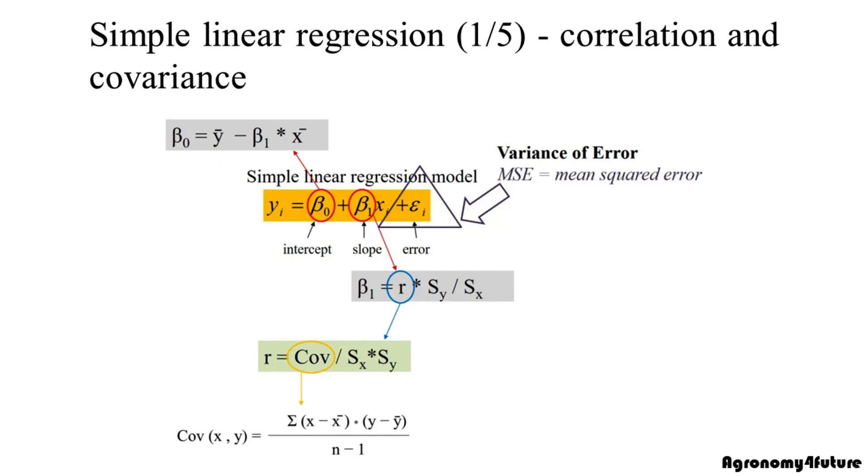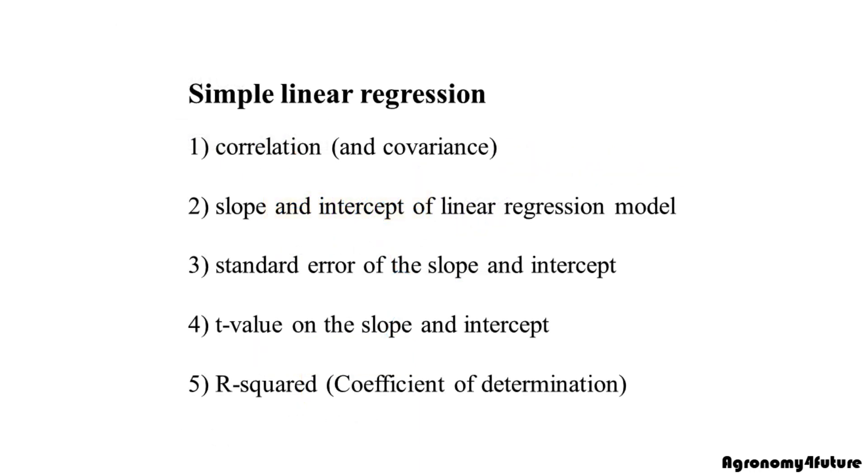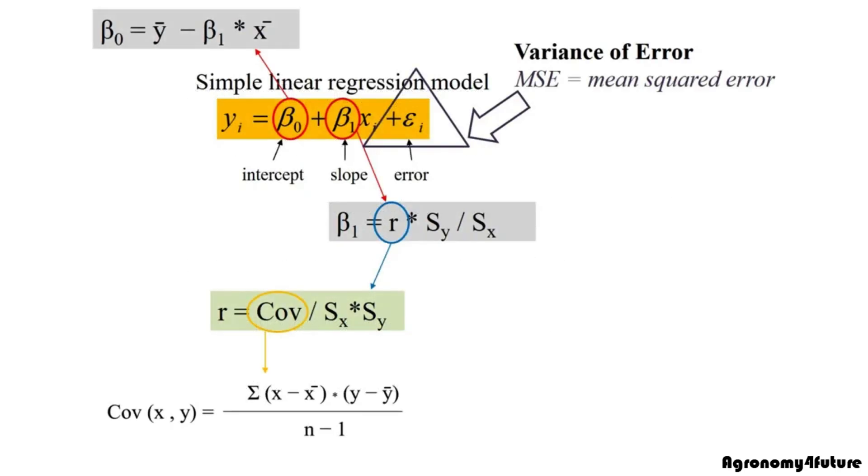In this context, I'll introduce simple linear regression with five different parts. First, correlation. Second, slope and intercept of linear regression model. Third, standard error of slope and intercept. Fourth, t-value on slope and intercept. And finally r-squared, also called coefficient of determination. If you follow those five parts step by step, I guarantee you can completely understand simple linear regression model as a whole picture.